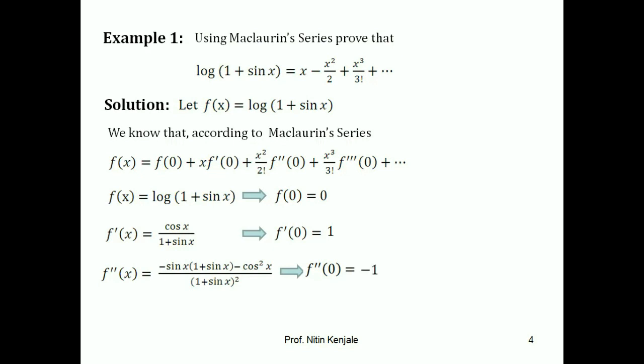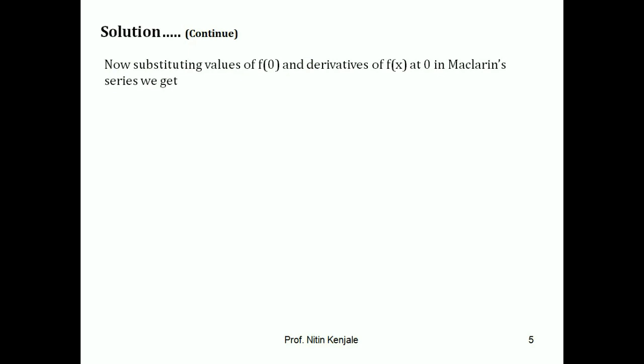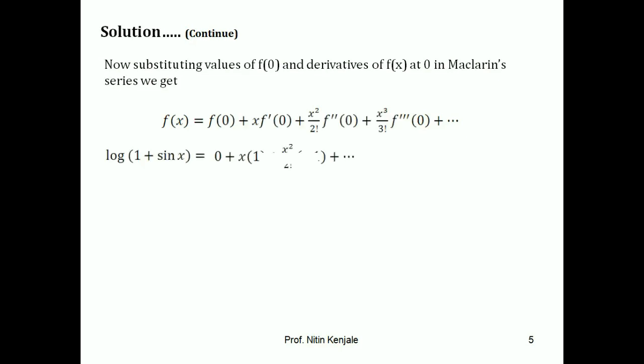We continue this process until we find at least 2 to 3 non-zero terms in the RHS series, then we write 'and so on'. Now we substitute the values of f(0) and derivatives of f at 0 in the Maclaurin series. We get log(1 + sin x) equals x plus x²/2 factorial into minus 1 plus dot dot dot. Comparing this with the given series, both are equal. Hence we have proved log(1 + sin x) equals x minus x²/2 factorial plus x³/3 factorial and so on.